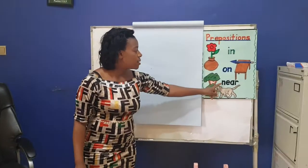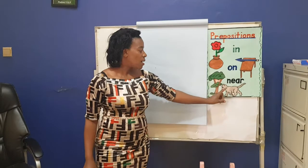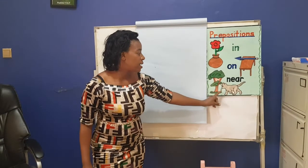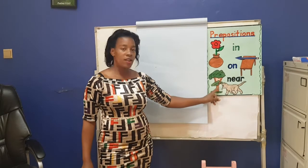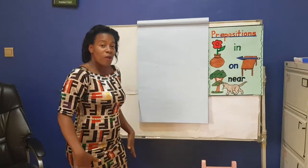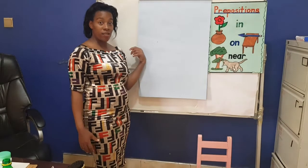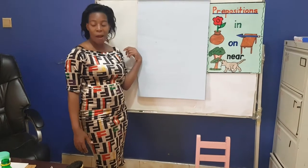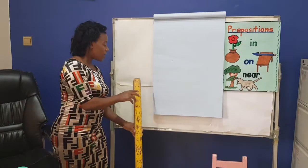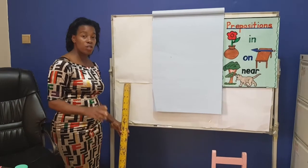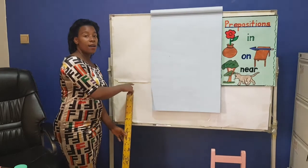Then we have near. If you look at our chart, the card is near the tree. If you look at me, I'm teacher Suzy — I'm near the board. I have a ruler. If I put it here, the ruler is near the board.